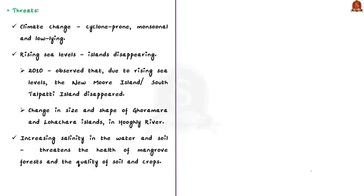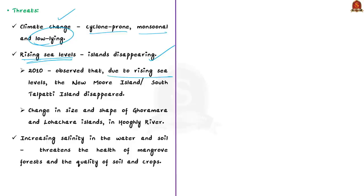One of the threats to Sundarbans is climate change. Sundarbans is cyclone-prone, monsoonal, and low-lying. When climate changes occur, they significantly impact the area, its flora, fauna and population. One main impact is rising sea levels, which cause islands to disappear. As early as 2010, the New Moor Island or South Talpatty Island disappeared due to rising sea levels. Scientists predicted that other low-lying islands could also vanish if sea levels continue to rise, and subsequent studies found changes in size and shape of Goromara Island and Lohachara Island on the Hooghly River.